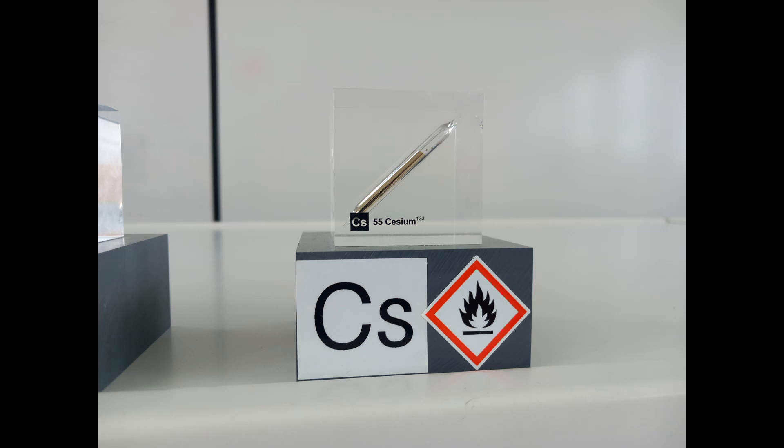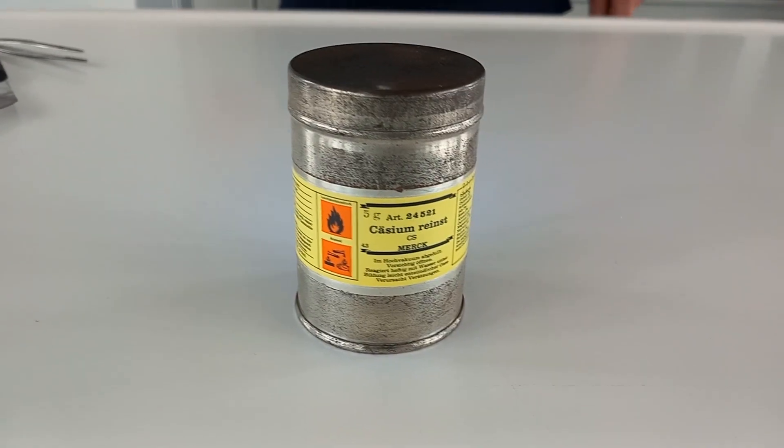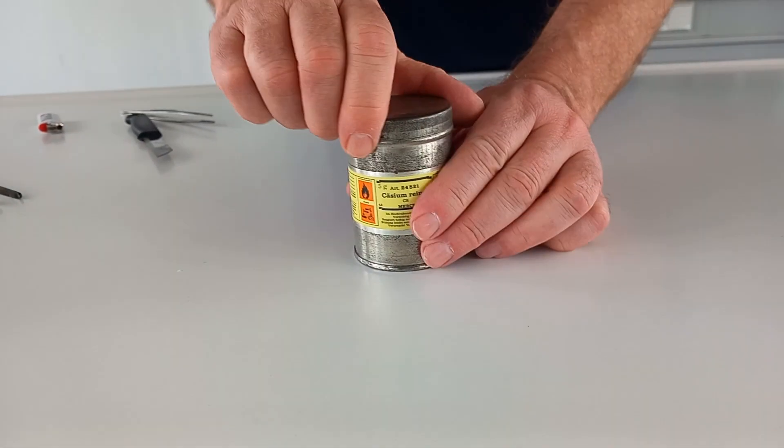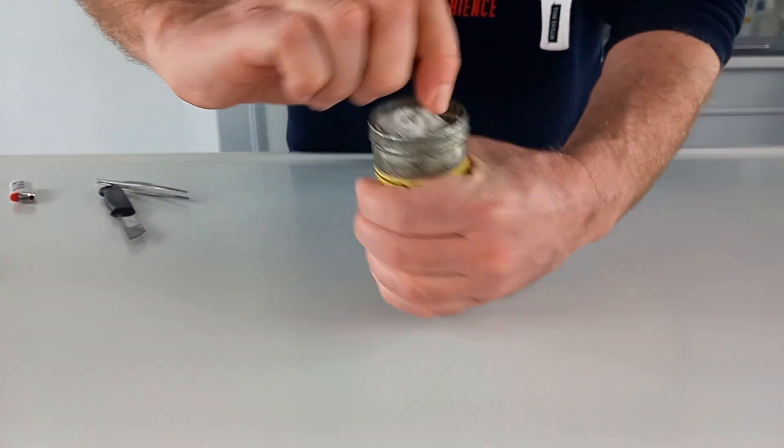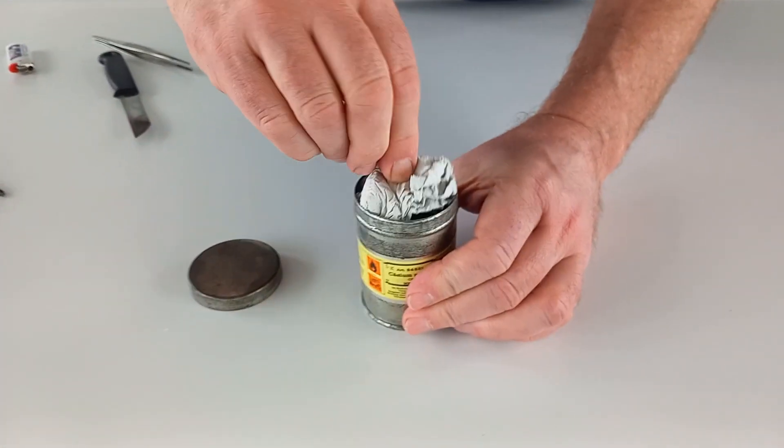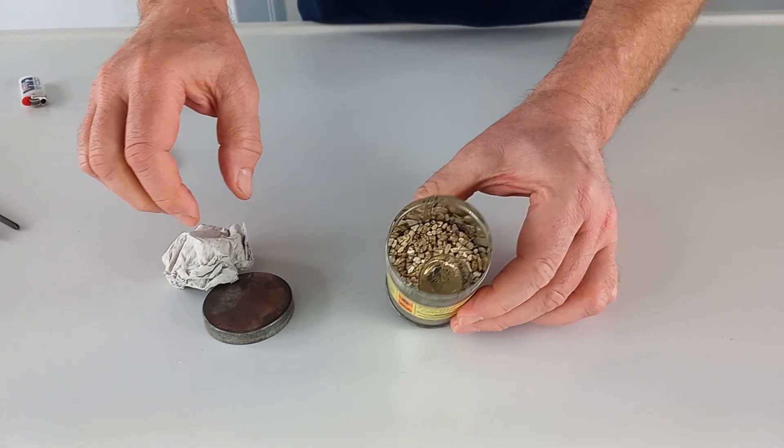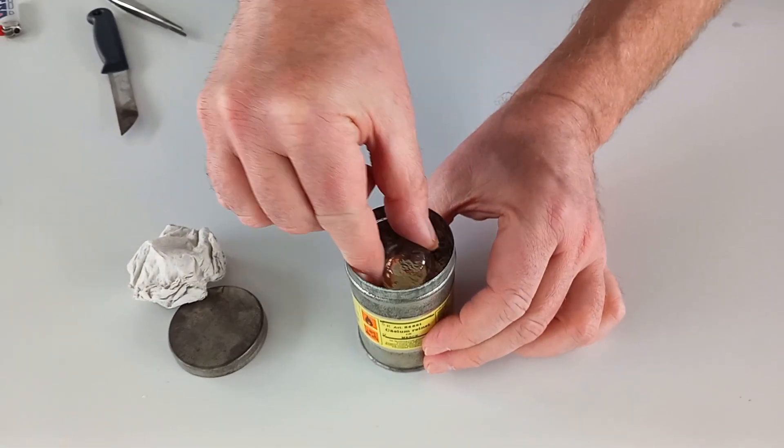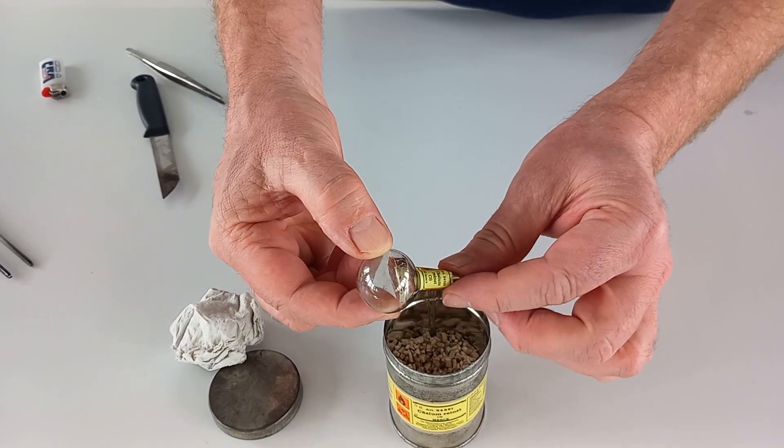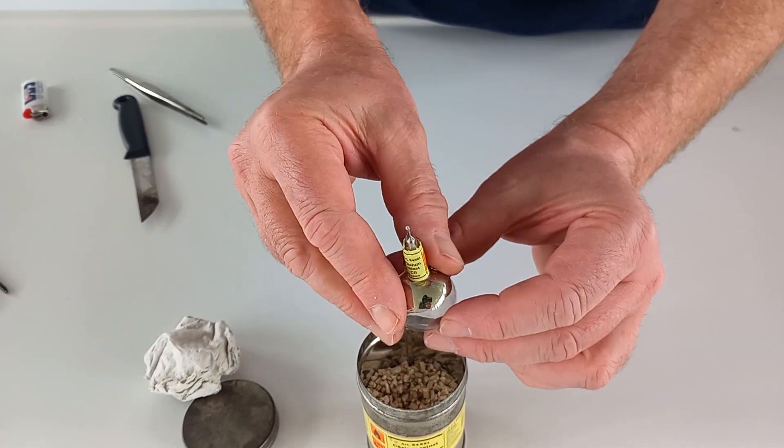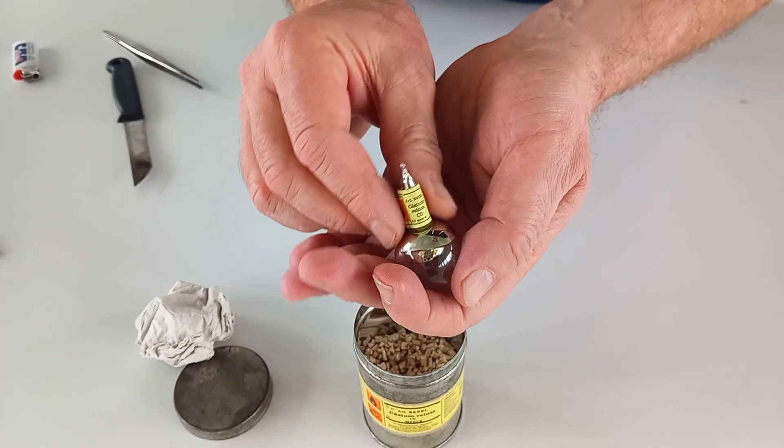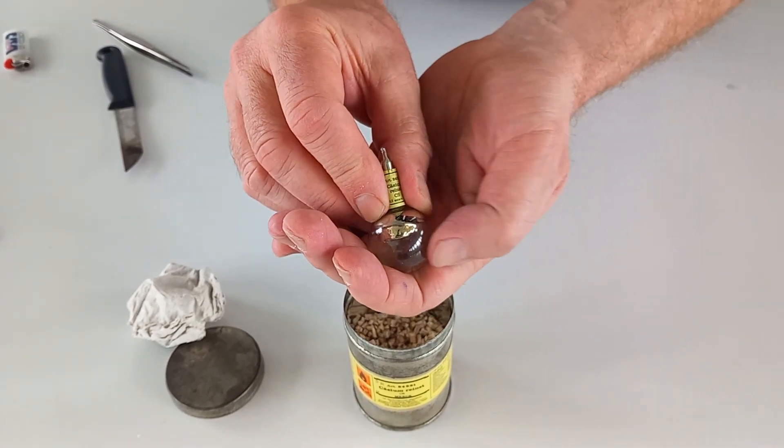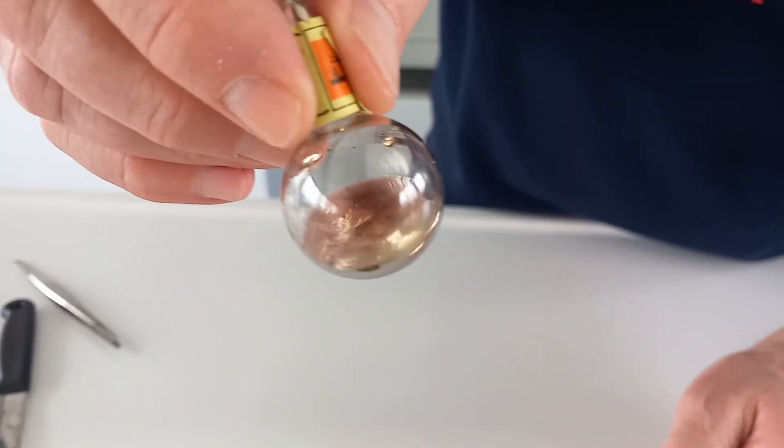The next alkali metal is cesium. The melting temperature of cesium is 28 degrees, which means at room temperature the cesium is a solid. When it is warmed up, it becomes a liquid.